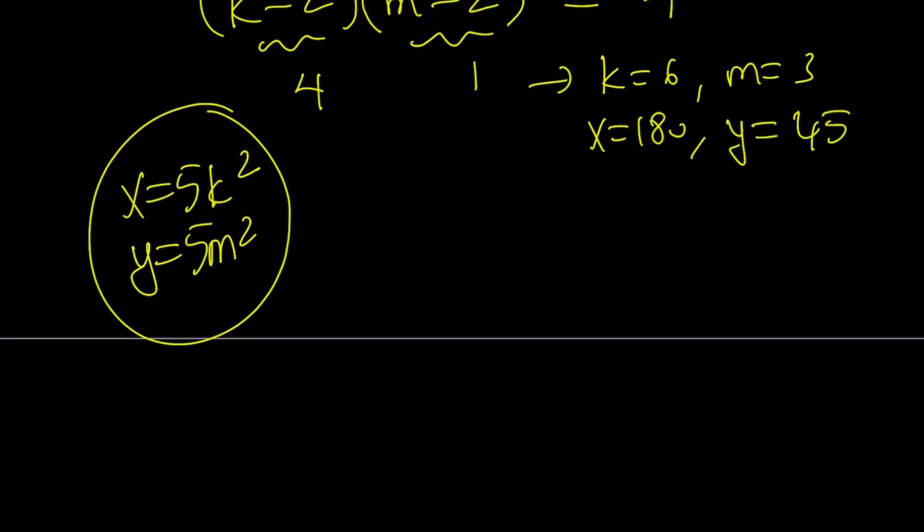Let's go ahead and take a look at another scenario. How about 2, 2 for k minus 2 and m minus 2? From here we get k equals 4, m equals 4. It just means that x equals 5 times 16 and y equals the same. So x is going to become 80 and y is going to be the same.